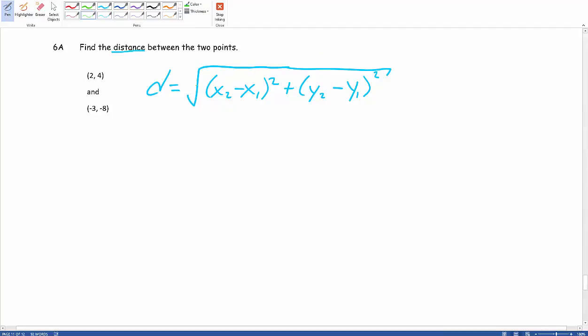Next, what we have to do is actually identify which one is going to be our x1, y1 and which one is going to be our x2, y2. So in looking at these, we'll go ahead and say that this 2, 4 is going to be our x2, y2, and that this negative 3, negative 8 will be our x1, y1.